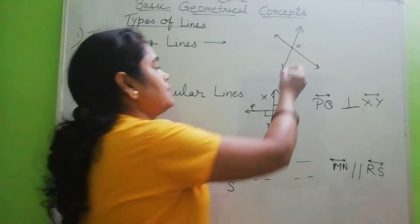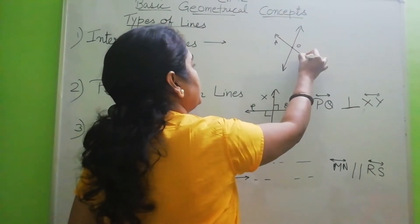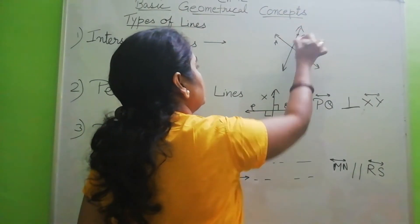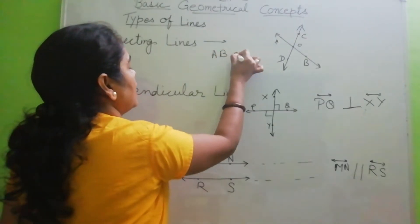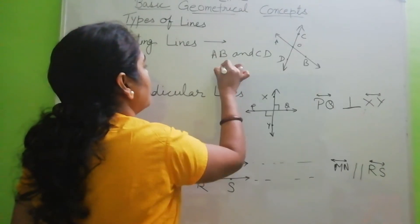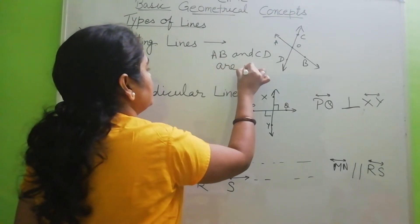But we can write here A, B, C, D. So we can write here A, B and C, D are intersecting.